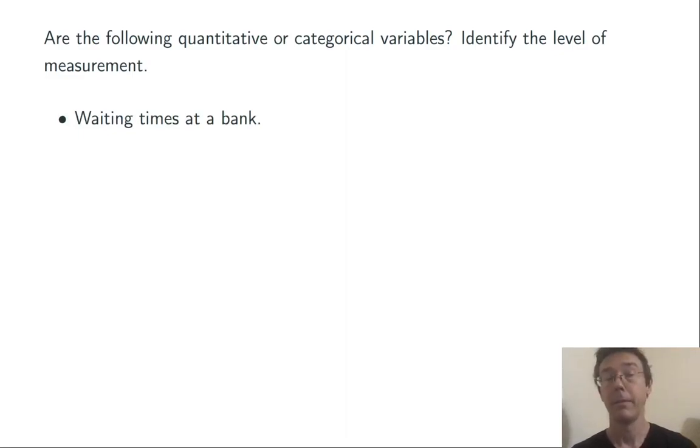Waiting times at a bank. These are going to be numbers, so we think it's going to be quantitative. And it definitely makes sense to talk about whether you wait twice as long or half as long. Zero has a real meaning here. This is quantitative data at the ratio level of measurement.